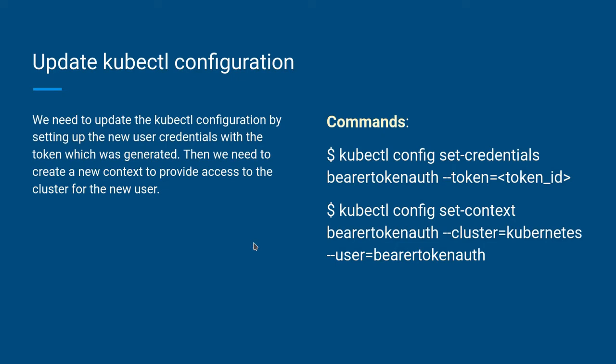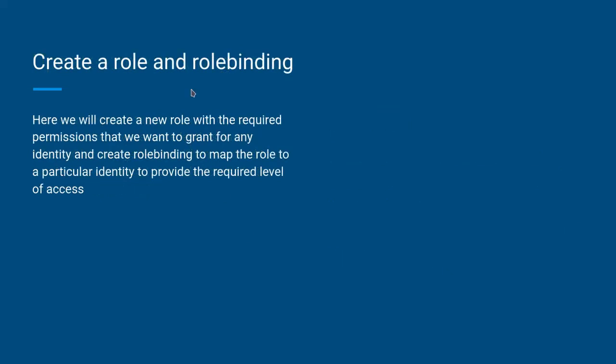Once the kubectl configuration is updated, we handle authorization. Once a user has been authenticated, it goes to the authorization module, which checks whether the user has required access to the resources — controlled using roles and role bindings. You can use cluster roles or cluster role bindings, but in my case I'm using role and role binding. We create a simple role with a particular set of actions on a particular set of resources, then apply that role to the service account created earlier.